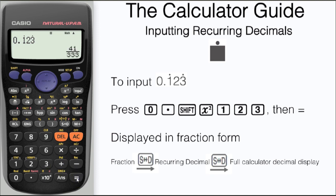Press equals, and here we have it displayed in fraction form. And again, if you want that to be displayed in decimal form, you can just press the SD button.